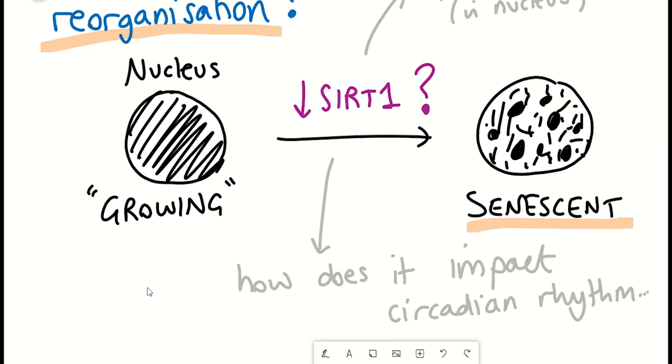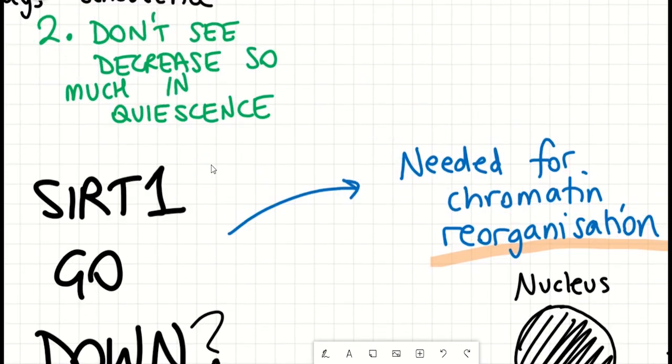And yeah, this pretty much is kind of opening Pandora's box. I don't really know how the circadian rhythm gets impacted in senescence, and I think that is a whole area in itself that's worth investigation. But SIRT1 is obviously important in this process, and it's important in lots of processes. So if you can take anything away from this video, you should take away that.